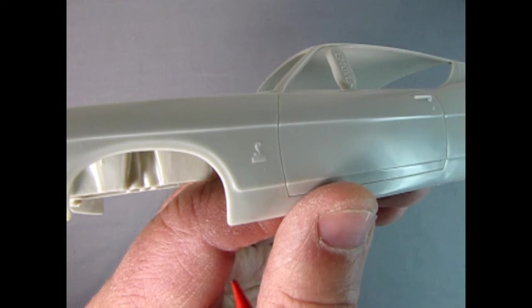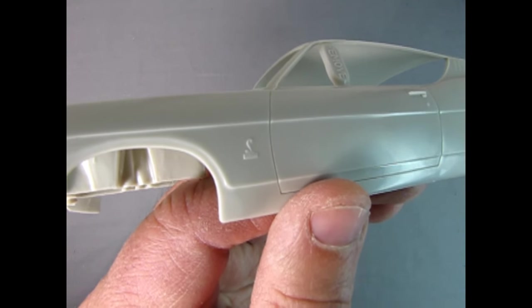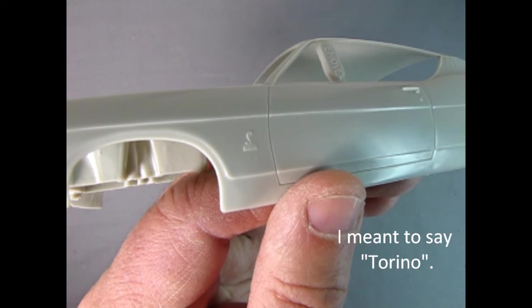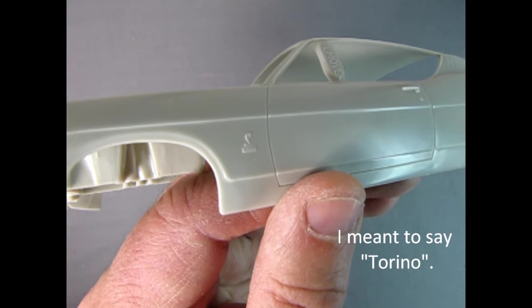On the side of the body, you can see the Cobra emblems on the trailing edges of the front fenders. Again, if your kit has a Torino rear bumper, you will have to remove these Cobra emblems.